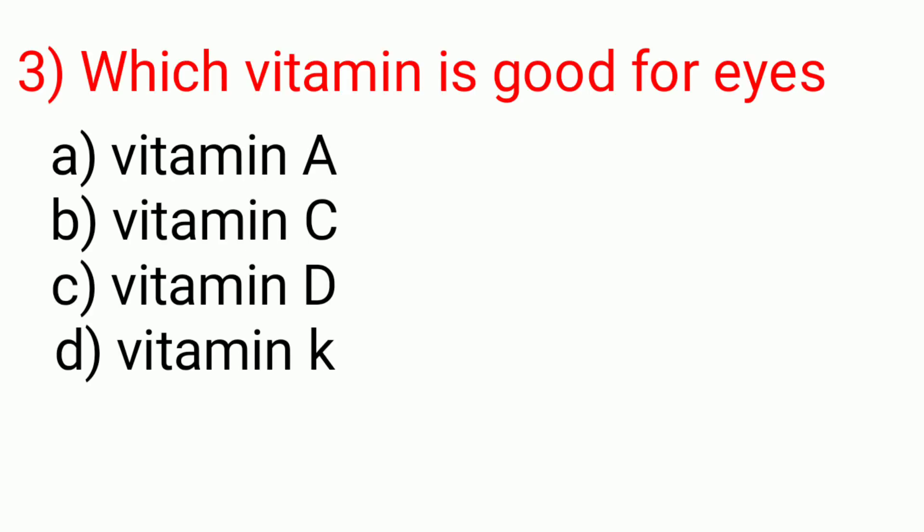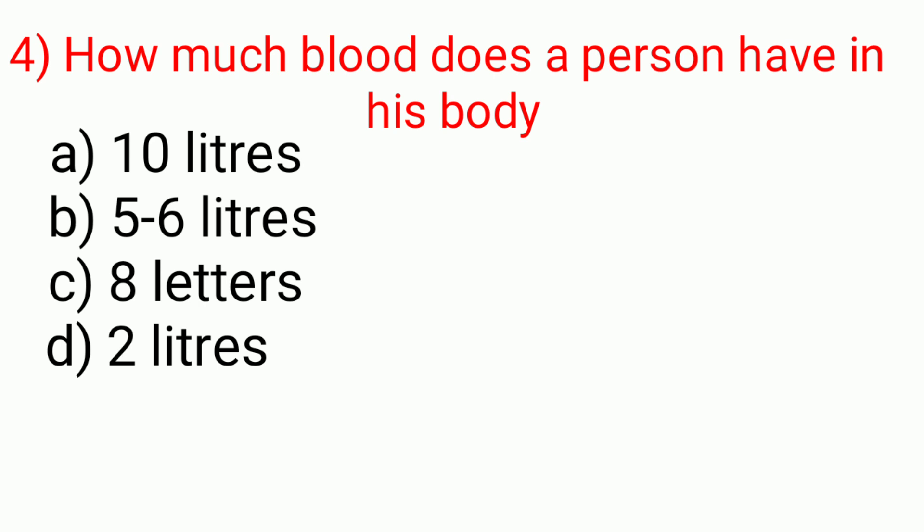Question number three: Which vitamin is good for eyes? Answer is A, vitamin A. Question number four: How much blood does a person have in his body? Answer is B, five to six liters.